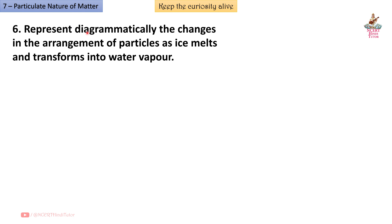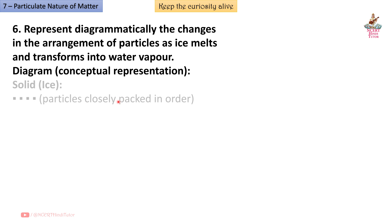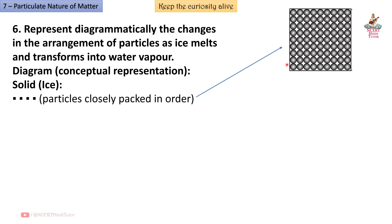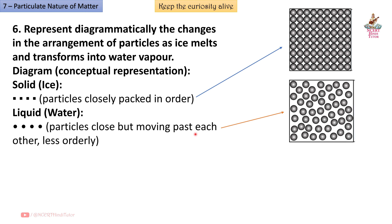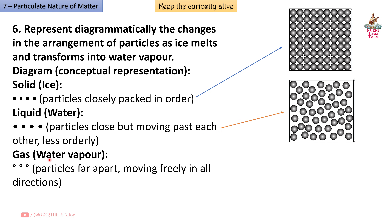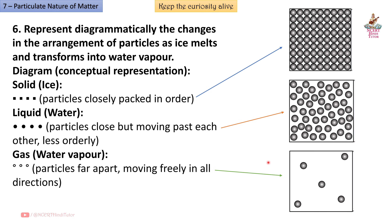Question 6: Represent diagrammatically the changes in the arrangement of particles as ice melts and transforms into water vapour. Solid (Ice): particles closely packed in an orderly arrangement. Liquid (Water): particles close but move past each other, less orderly. Gas (Water Vapour): particles far apart, move freely in all directions.